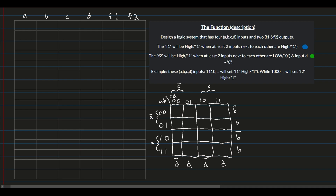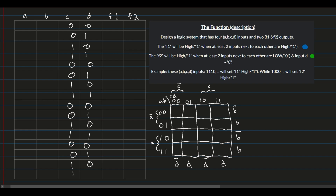When filling out the table, we first look at our CD values. We run through the pattern once — 00, 01, 10, 11 — and then repeat it for all 16 rows. Make sure that you keep the same order throughout.